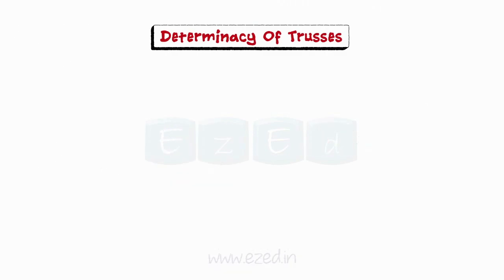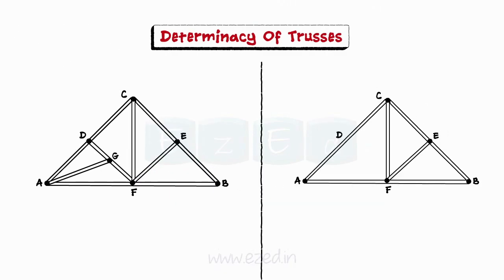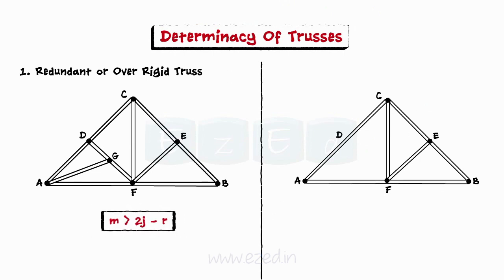Statically indeterminate trusses are of two types: redundant or over-rigid truss, where the number of members is more, and deficient truss, where the number of members is less.